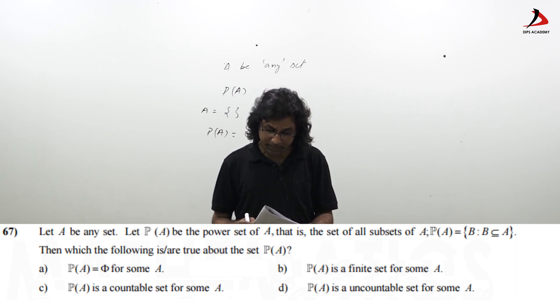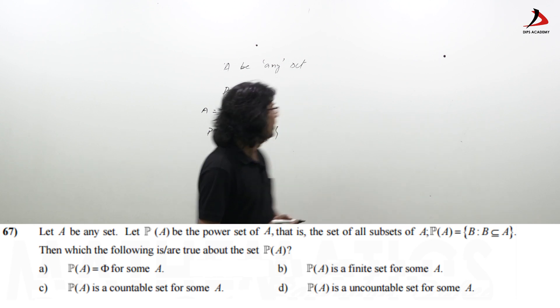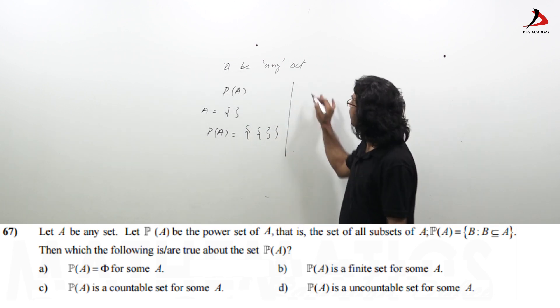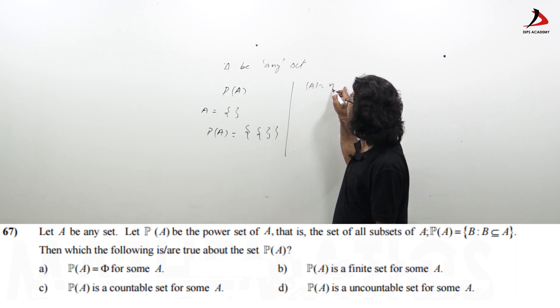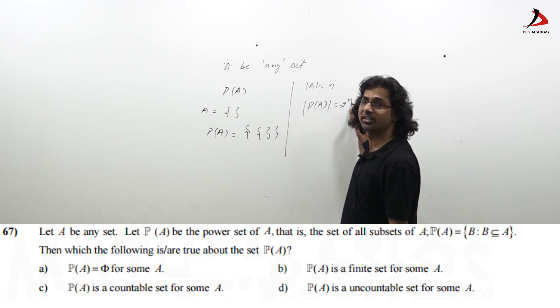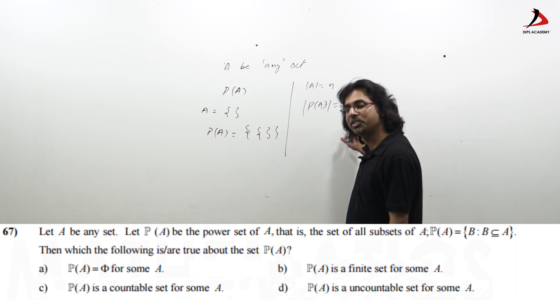Second option is P(A) is finite set for some A. Certainly we know very fundamental 12 standard, if A has n element, then we know P(A) has 2 raise to the power n element. So, if A is finite, P(A) has to be finite.